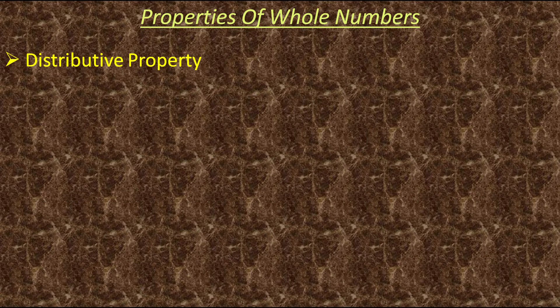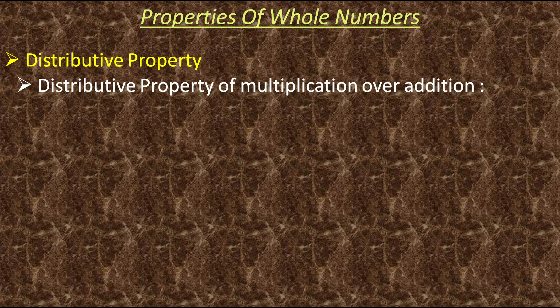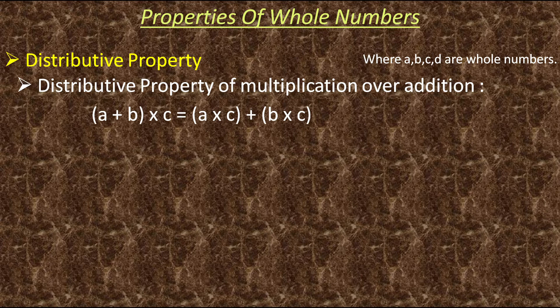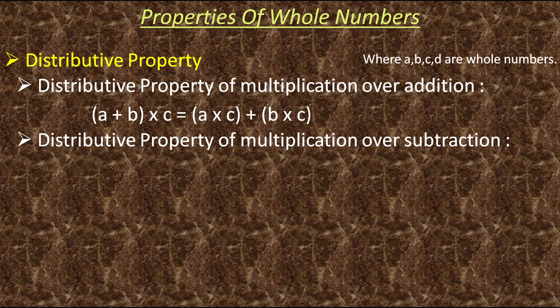Next comes distributive property. Distributive property of multiplication over addition says that we can distribute the multiplier with each addend separately and then we can add the products. Same way, distributive property of multiplication over subtraction says that we can distribute the multiplier with each number separately and then we can subtract the products.